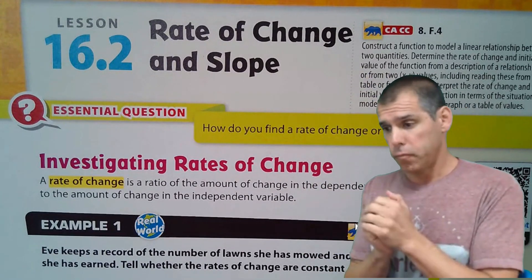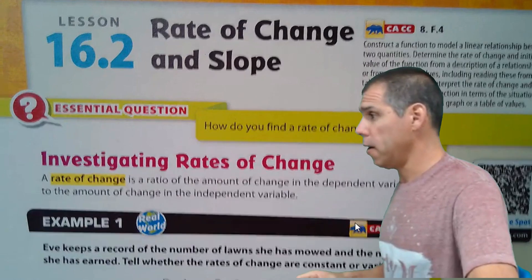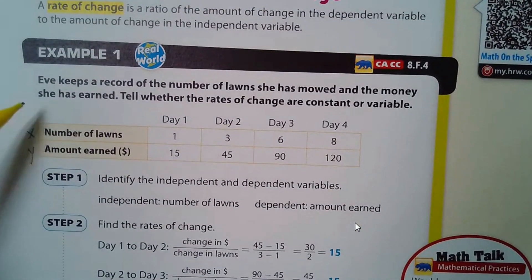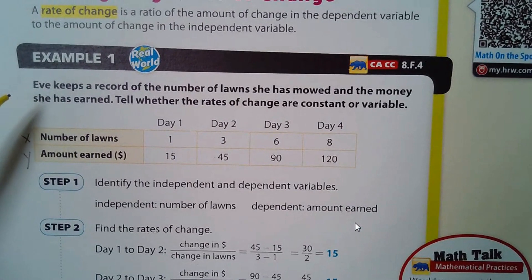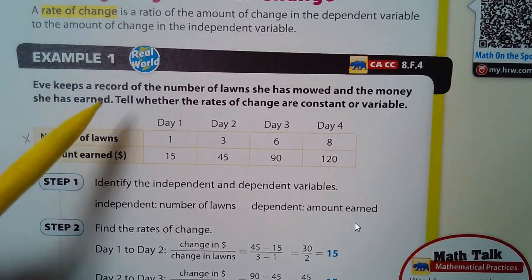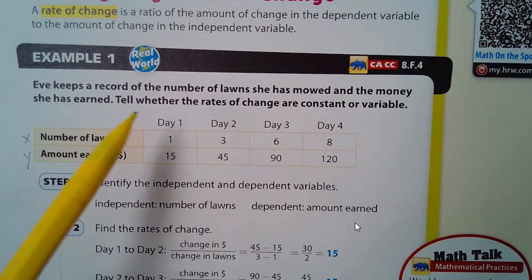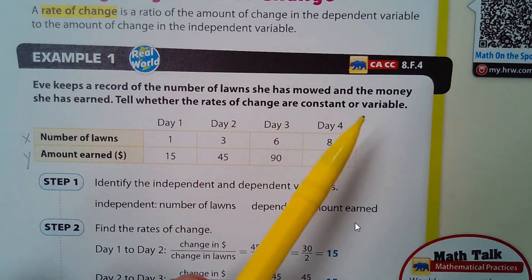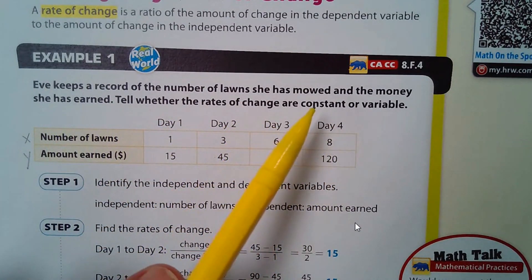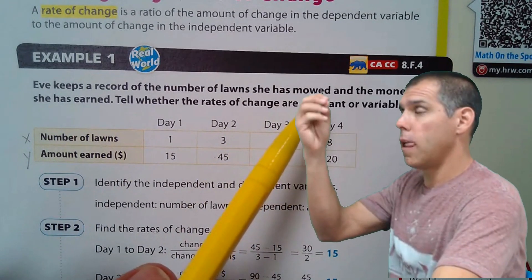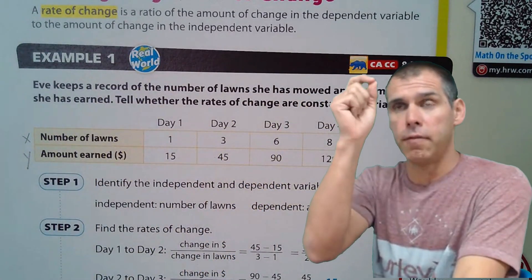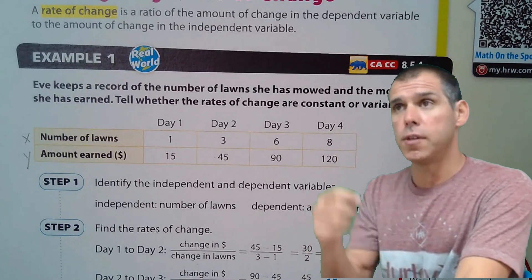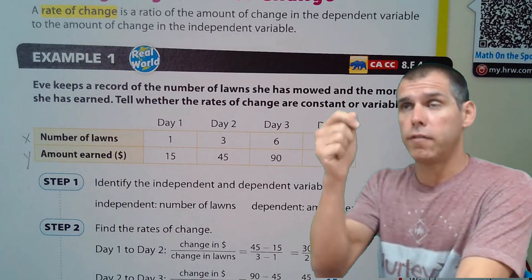Looking at our example: Eve keeps a record of the number of lawns she's mowed and the money she has earned. We need to tell whether the rates of change are constant or variable. Constant means the rate of change is the same throughout, while variable means the rate of change will be different.